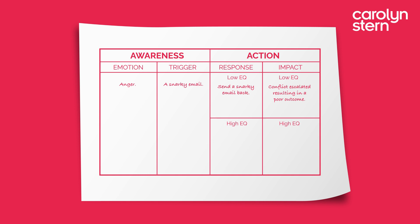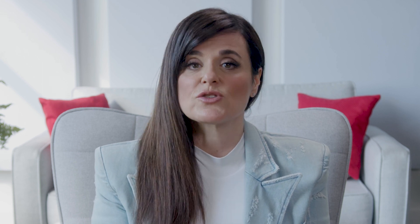A high EQ response would be: you calm down your anger, go for a walk, and once cooled down, ask to set up an in-person meeting to discuss your differing viewpoints. So write down 'cool off, walk it off, and ask to set up an in-person meeting' under the Response column.